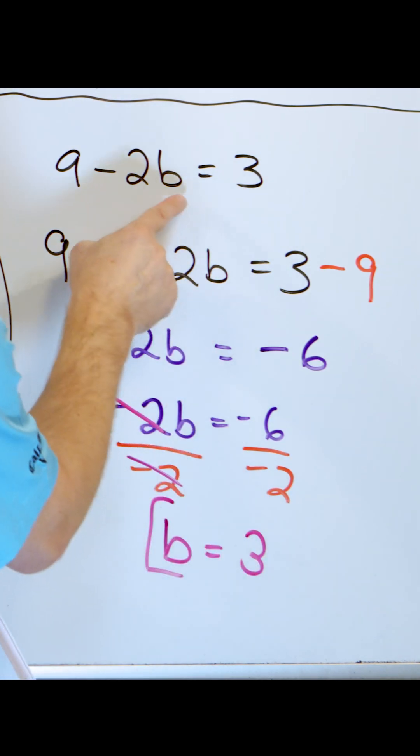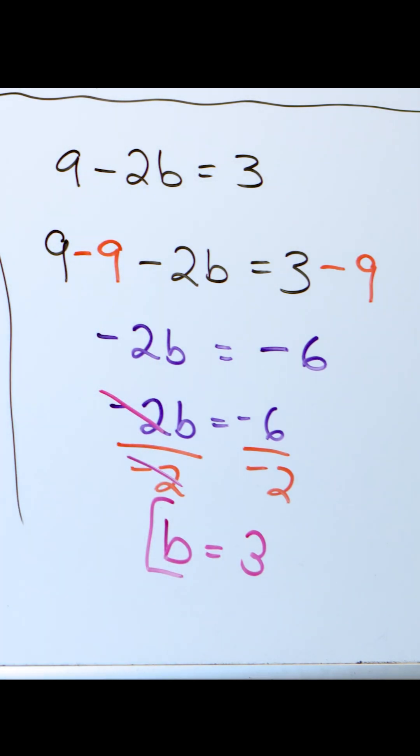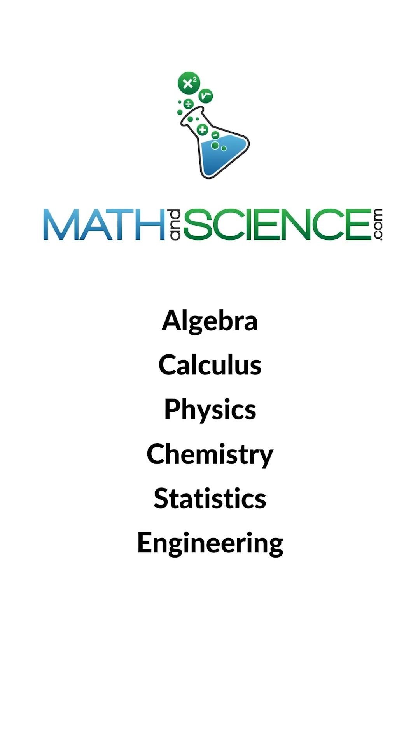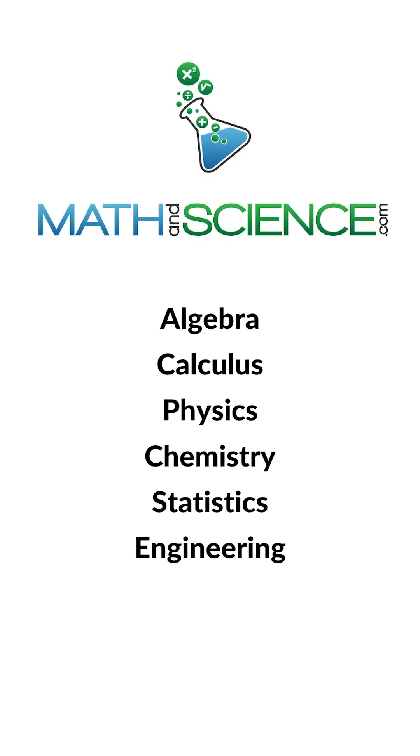And you can check yourself, put a three in here. Two times three is six. And then nine minus the six is three. And so that is the correct answer. Learn anything at math and science.com.